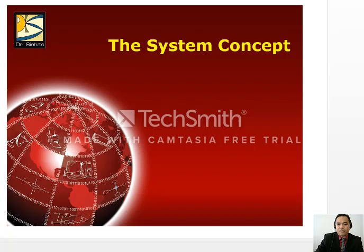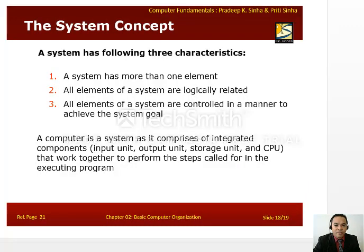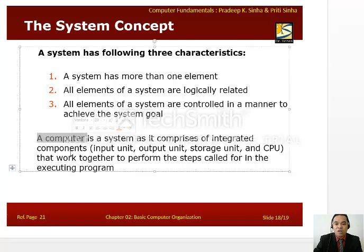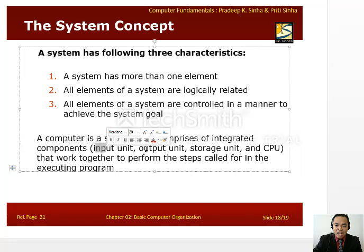What is a system? A system has three characteristics: a system has more than one element, all elements of a system are logically related, and all elements are controlled in a manner to achieve the system goal. Therefore, a computer is a system because it comprises interrelated or integrated components like input unit, output unit, storage unit, and CPU that work together to perform the steps called for in the executing program.